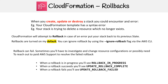These are the states you will see: when a rollback is in progress, you'll see 'Rollback In Progress'; when a rollback succeeds, you'll see 'Update Rollback Complete'; and when a rollback fails, you'll see 'Update Rollback Failed'.